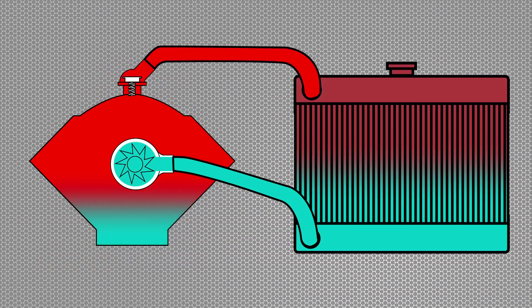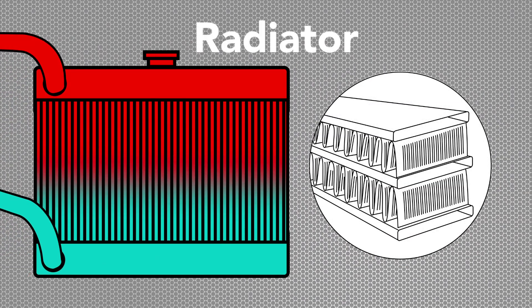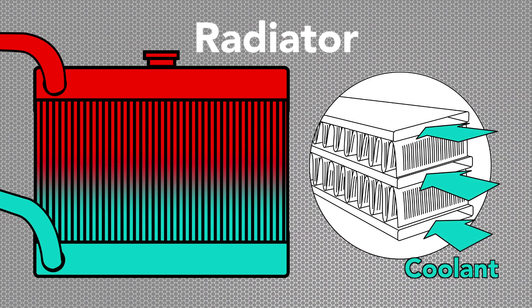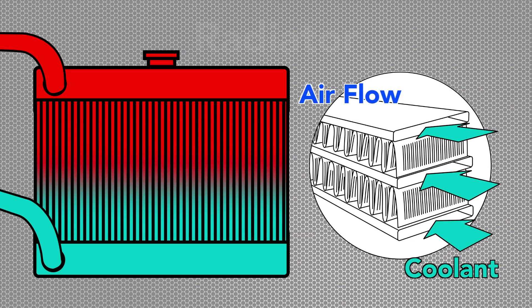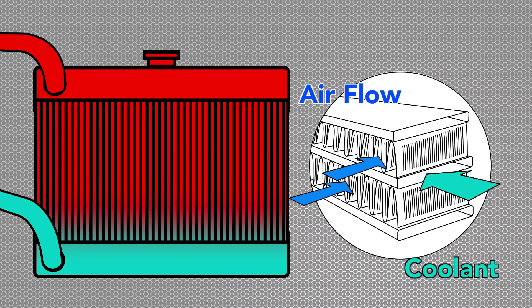Heated coolant flows into the radiator inlet. It is passed through a series of tubes and fins that effectively dissipate the heat from the coolant. Radiator restriction can compromise its ability to transfer heat. These restrictions can be either external airflow or internal coolant restriction.